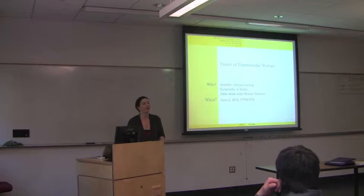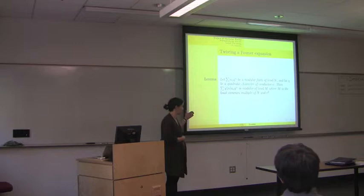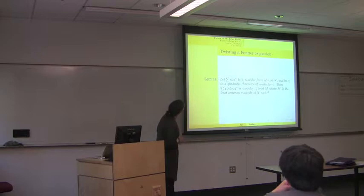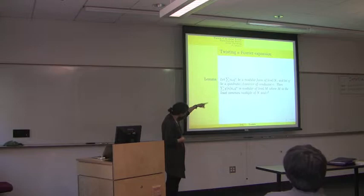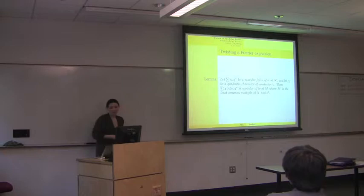I want to motivate this by saying that twisting is a natural operation. If you think about classical modular forms and look at their Fourier expansion, if you have a character of conductor C and the modular form is level N, you can stick that character right in front of the Fourier coefficients, and that's also the Fourier expansion of a modular form. It's at level M, where M is a multiple of N and the square of the conductor.